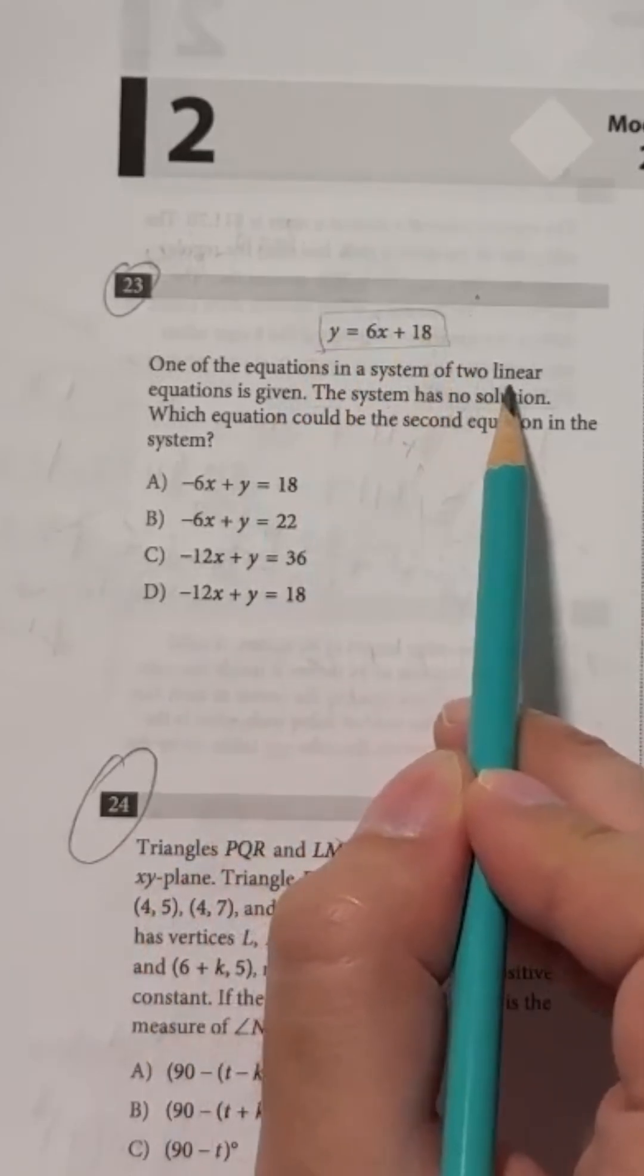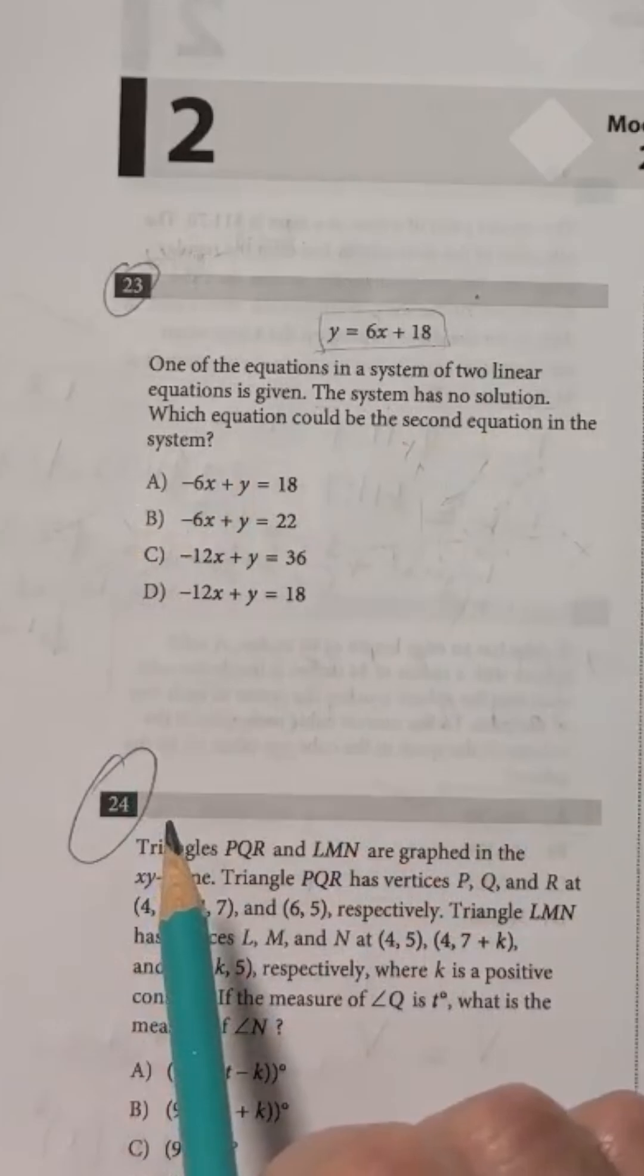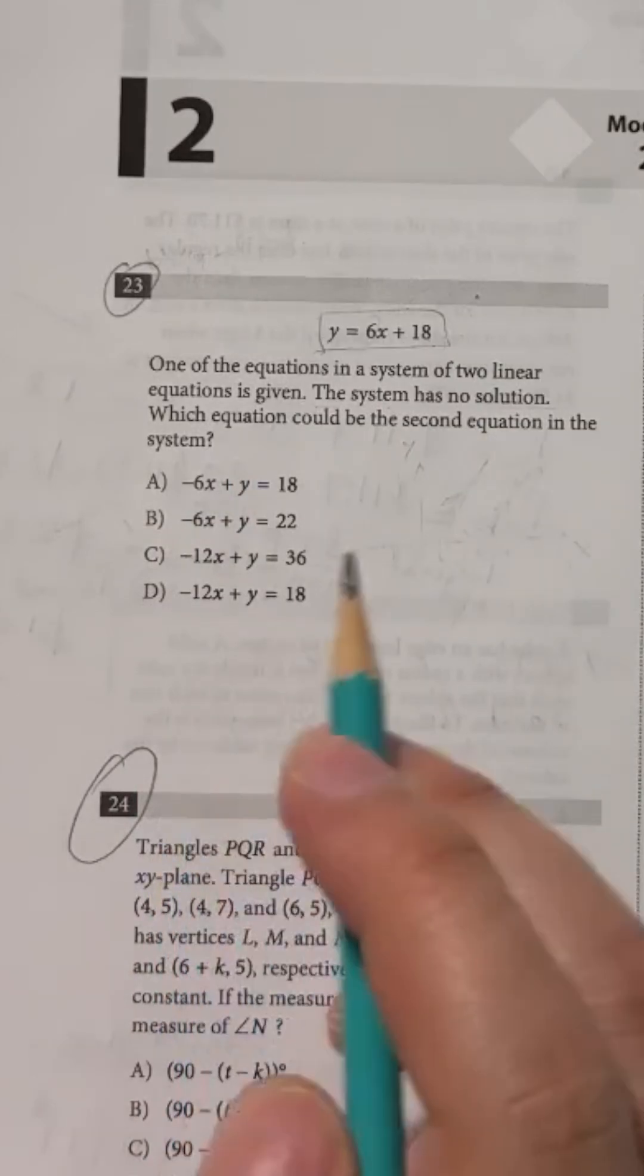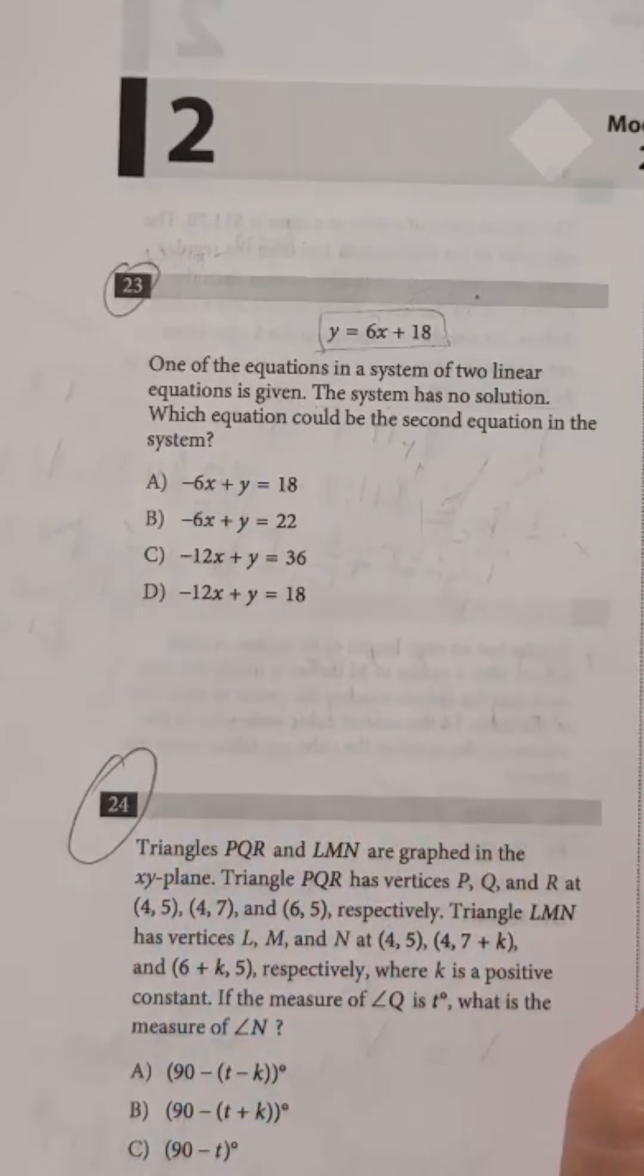This is part of a system of two linear equations. You need to find the second equation from the options below, a, b, c, and d, so that the system has no solution.